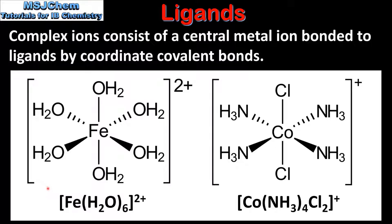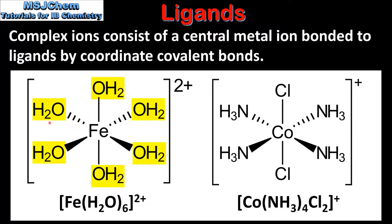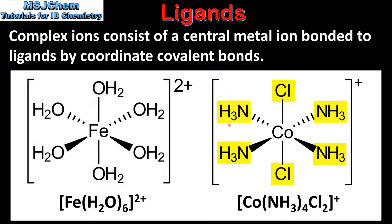Here we can see two examples of complex ions. At the centre of each complex ion we have a central metal ion bonded to ligands by coordinate covalent bonds. In the complex ion on the left the ligands are water molecules, and in the complex ion on the right the ligands are ammonia molecules and chloride ions.